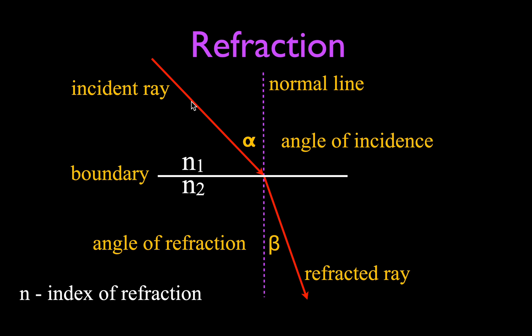The angle of incidence is the angle between the normal line and the incident ray. It is not the angle between the boundary of the two materials and the incident ray. It is always the normal line and the ray. N1 and N2 are the indices, or the index of refraction, of each of those two materials.